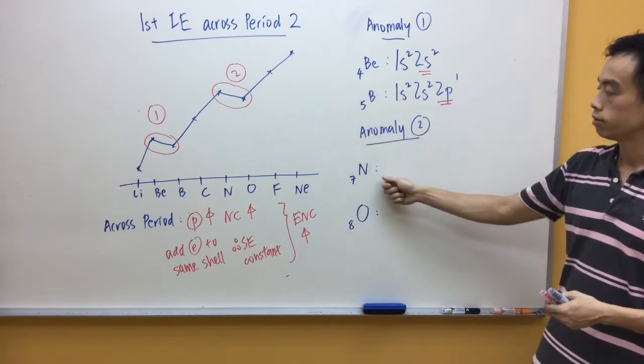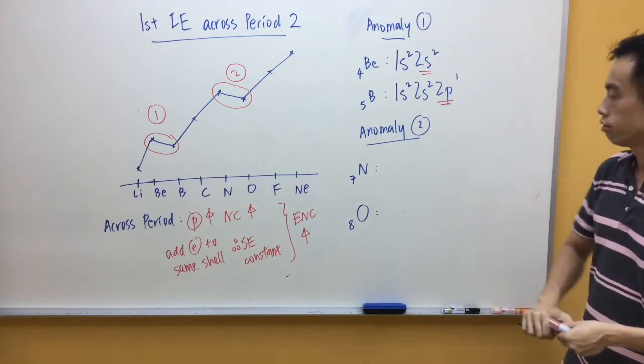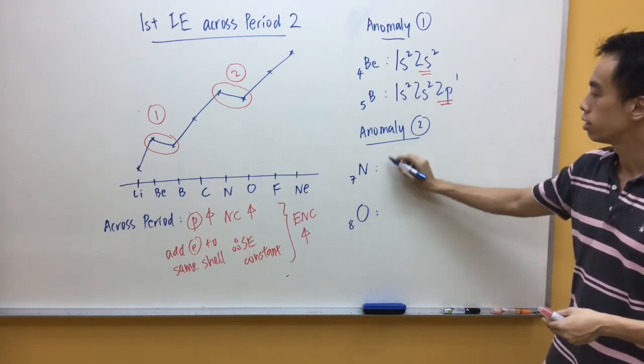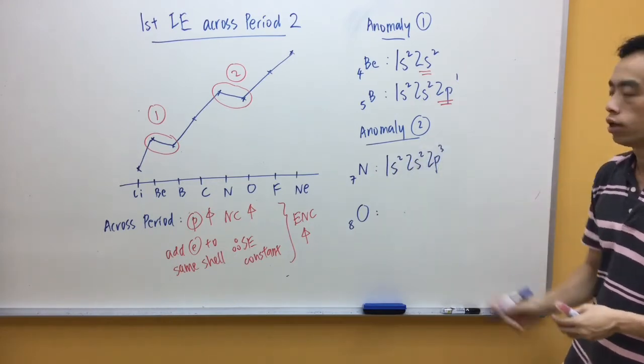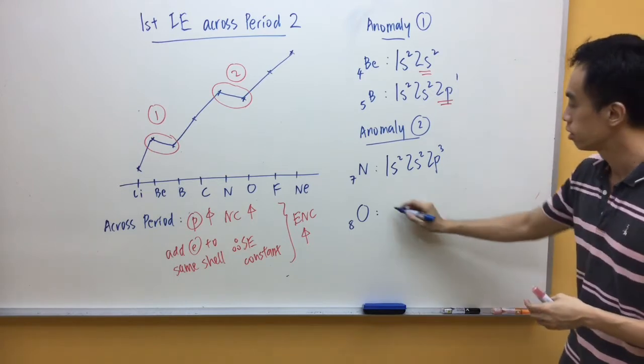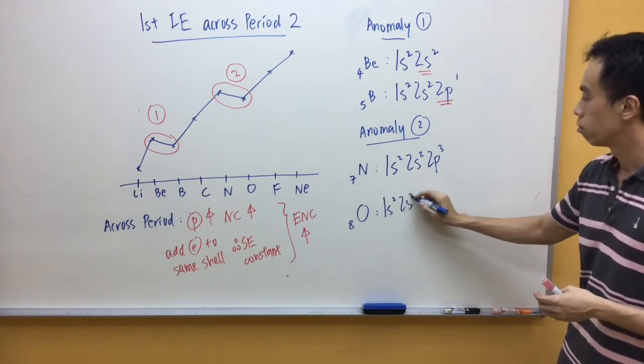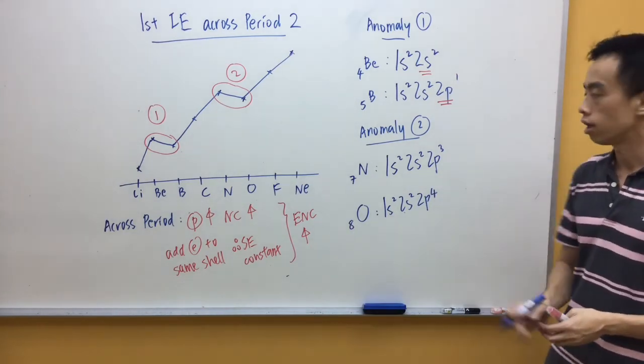Now, for the second anomaly between nitrogen and oxygen, we do the same thing to draw out the electronic configuration. For nitrogen, 7 electrons, 1s2, 2s2, 2p3. For oxygen, 8 electrons, 1s2, 2s2, 2p4.